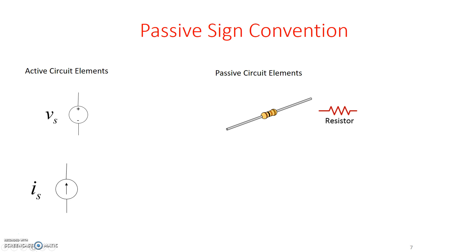Active circuit elements can be defined as those circuit elements that produce, that generate power — so like a voltage source or a current source. Whereas passive circuit elements are elements that would consume or dissipate power — for example, a resistor, capacitor, inductor, and so forth.